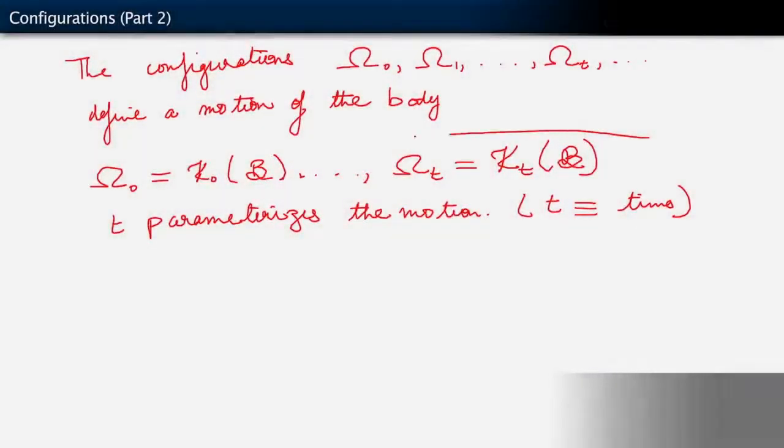Now, so this is how we describe configurations and therefore motions of the body. If you stare at this line, there is something a little unsatisfactory about it. We have these motions represented through these maps every time we are mapping the body B to a different configuration.